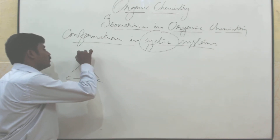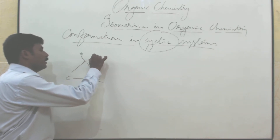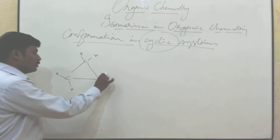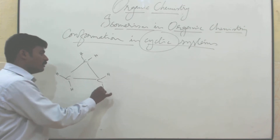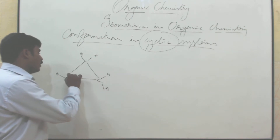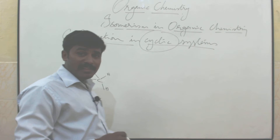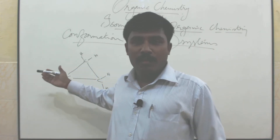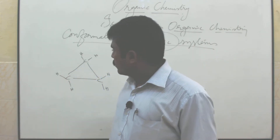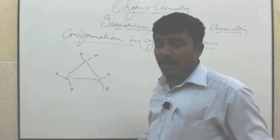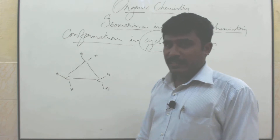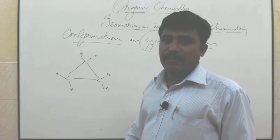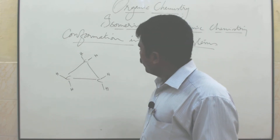Suppose you have these 3 hydrogen atoms: CH₂, CH₂, CH₂ — that is cyclopropane. Each is an sp³ carbon. So using 3 carbons itself we can make one ring — cyclopropane.